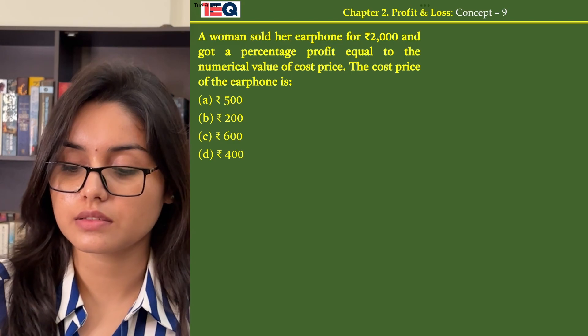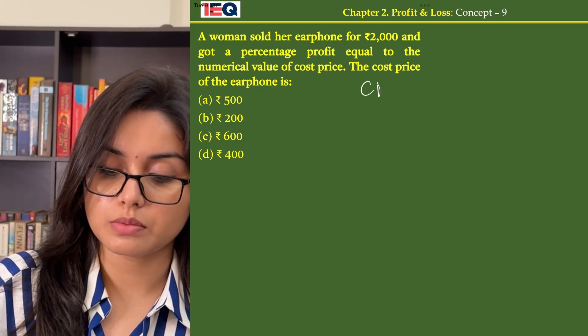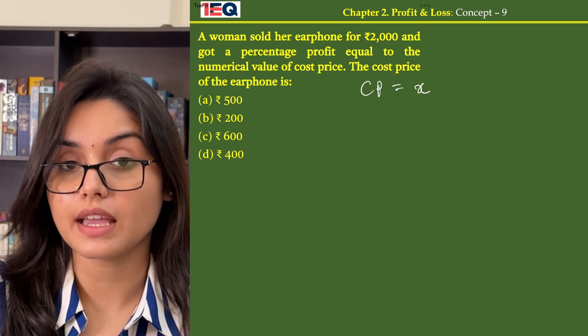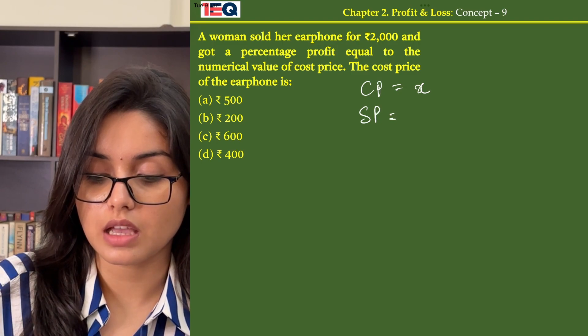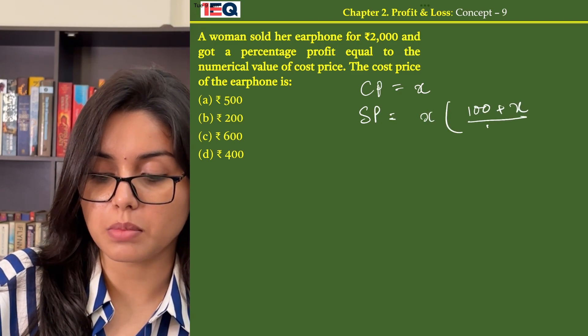Let the cost price be x. Cost price equal to x. If there was a profit of x percentage, then the selling price must be x into 100 plus x by 100.